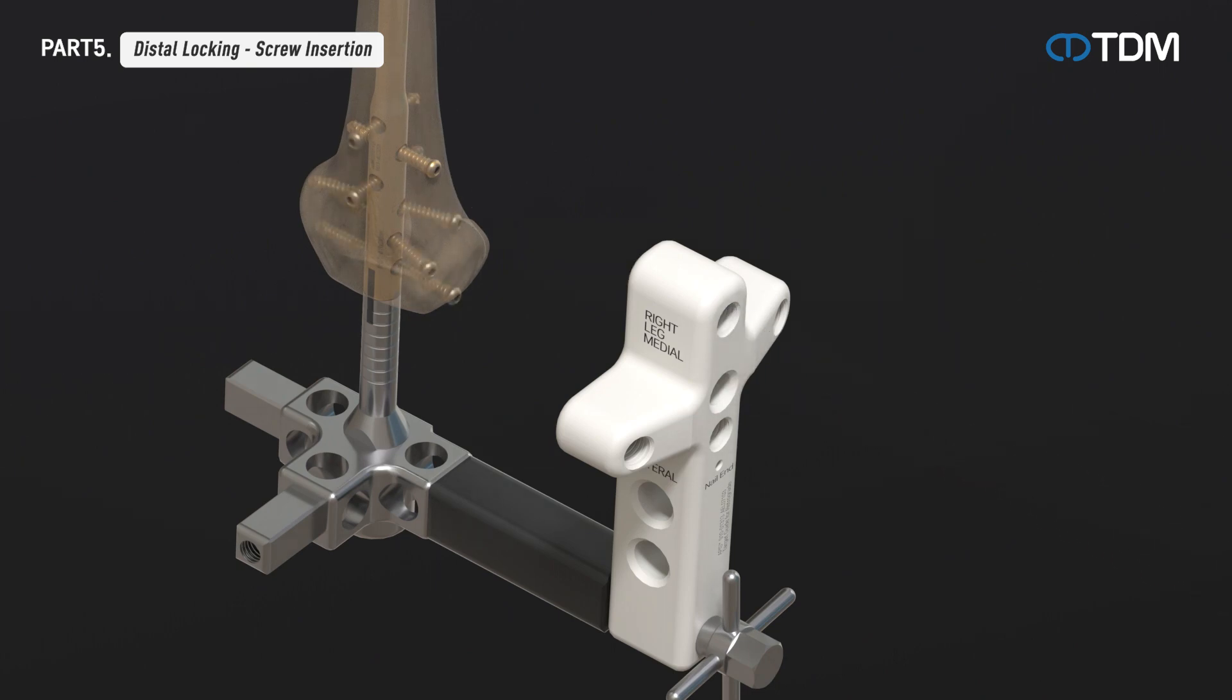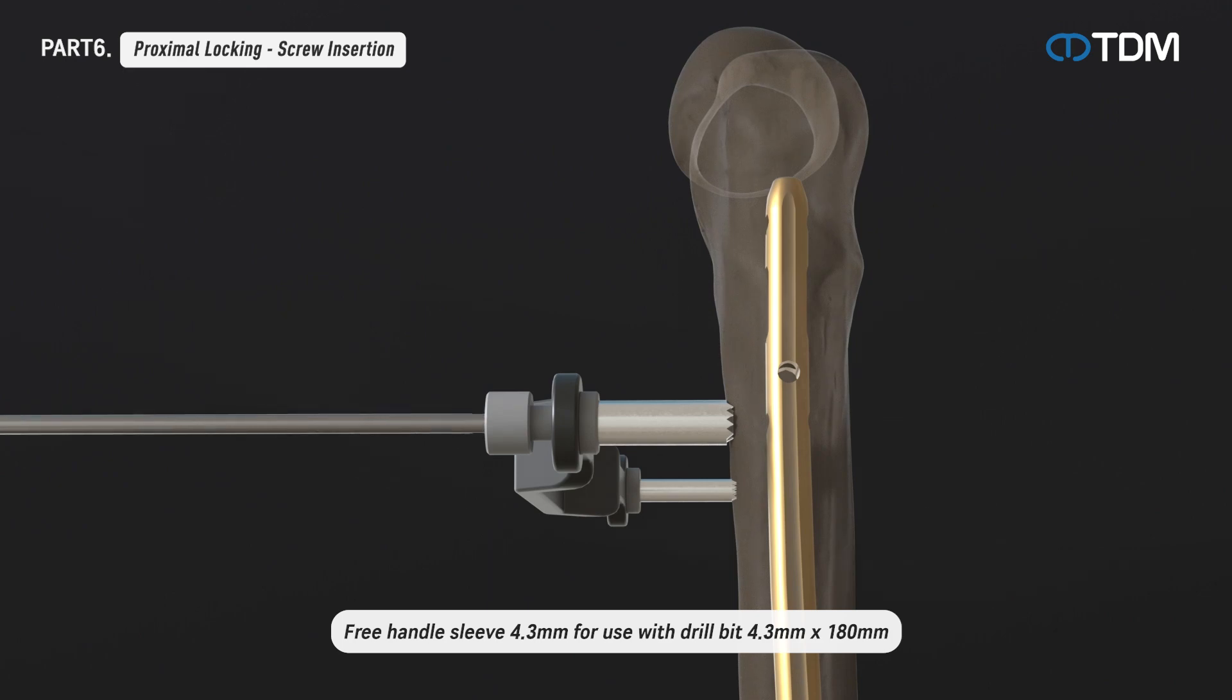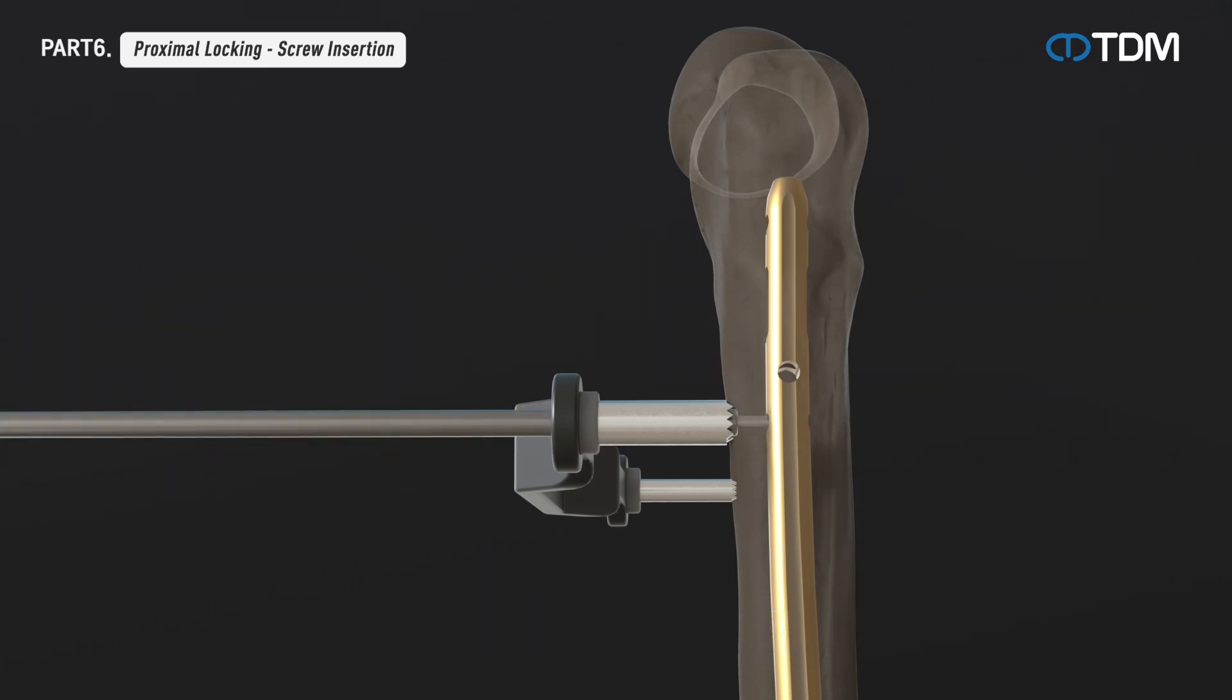Insert the remaining locking screws in the same way to complete the distal part procedure. The proximal screw tightening is carried out using a freehand technique. Using the freehand drill guide, drill to the center of the screw hole and check the depth with the depth gauge and insert the screw.